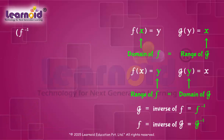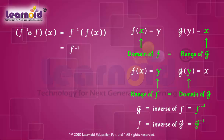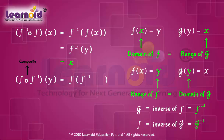Now, f inverse composite f of x is equal to f inverse of f(x). Since f(x) is equal to y, f inverse of y is x. And f composite f inverse of y is equal to f of f inverse(y). Since f inverse(y) is equal to x, f of x is equal to y.